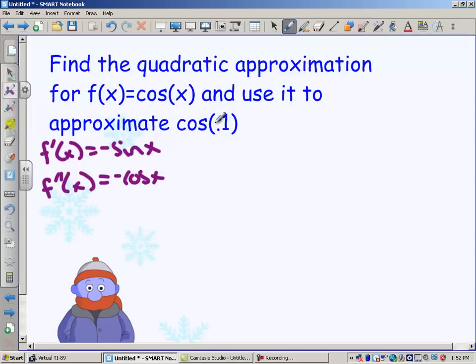And my center, where are we going to center this? Well, if we want to approximate cosine of 0.1, it might be a good idea to center this close to 0.1 and at a place where we can actually find values of cosine and sine, and that happens to be at x equals 0. So let's center this at x equals 0.